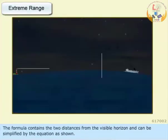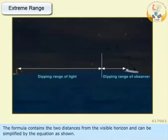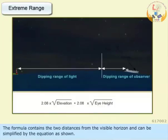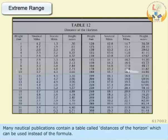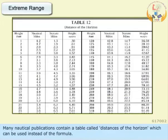The formula contains the two distances from the visible horizon and can be simplified by the equation as shown. Many nautical publications contain a table called distances of the horizon, which can be used instead of the formula.